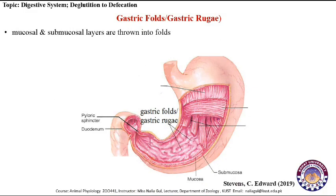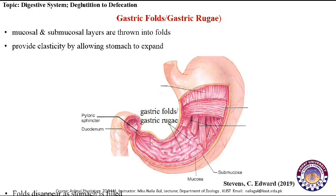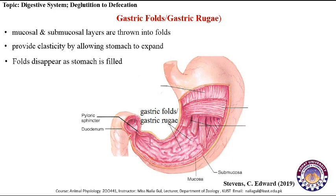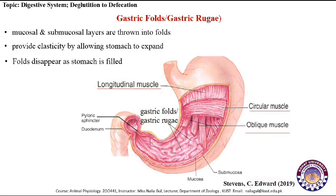The mucosal and submucosal layers of the stomach are thrown into large folds called gastric folds or rugae. These folds allow the stomach to expand upon entry of the bolus and disappear as the stomach fills. Unlike the rest of the gastrointestinal tract which has two muscular layers, the stomach has three: the outermost longitudinal muscles, the circular muscles, and the innermost oblique muscles, which aid in digestion by grinding food together with digestive juices.